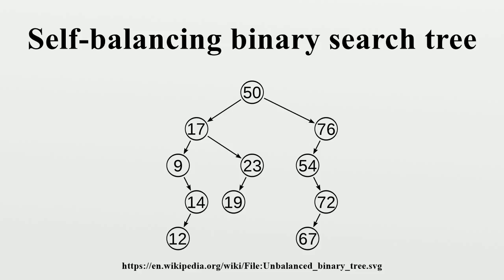Overview: Most operations on a binary search tree take time directly proportional to the height of the tree, so it is desirable to keep the height small. A binary tree with height h can contain at most 2^0 + 2^1 + ... + 2^h = 2^(h+1) − 1 nodes.